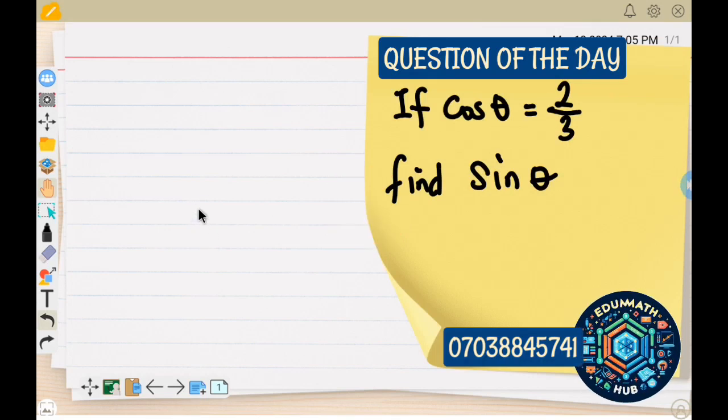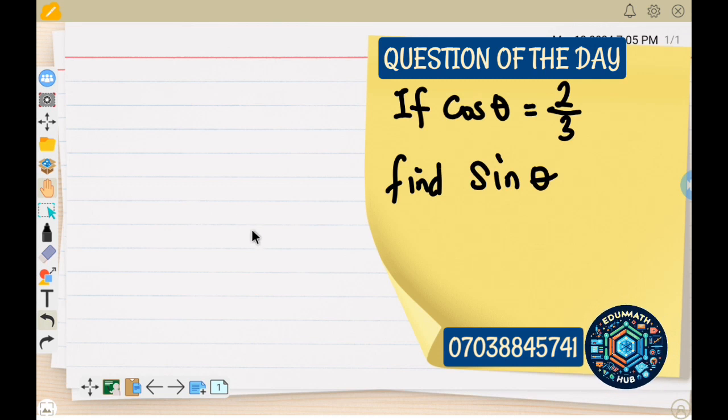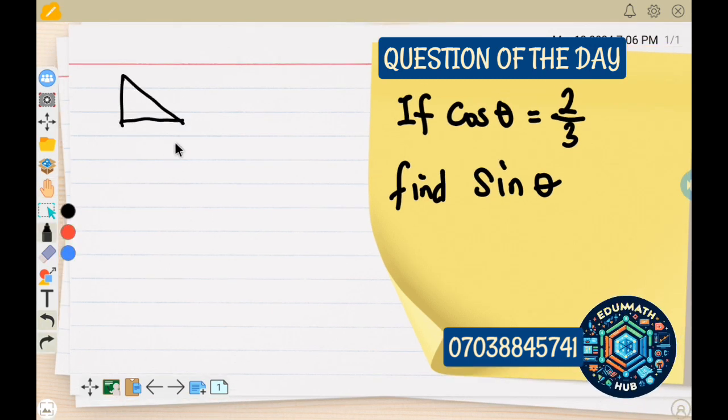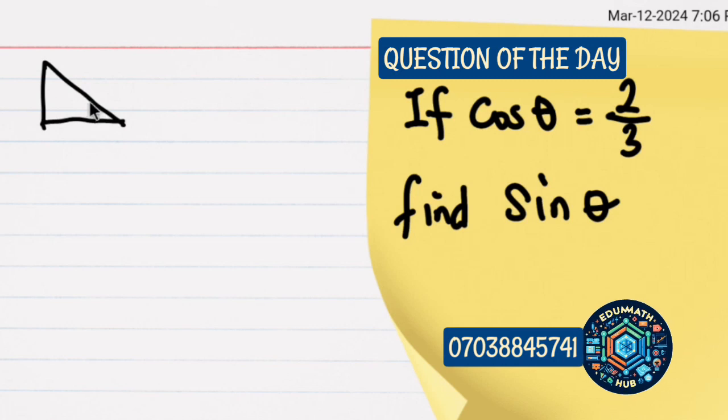Welcome to the channel. To solve this question, you are told that if cos θ equals 2 over 3, you have to find the value of sin θ. The first thing to do is to draw a right-angled triangle, then insert the value of theta.